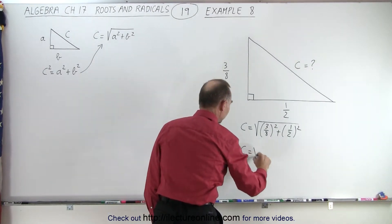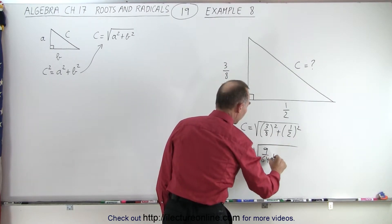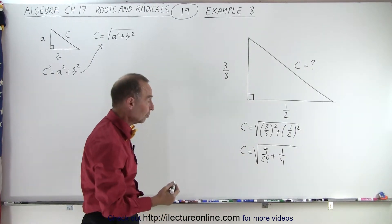So we say that c is equal to the square root of 9 over 64 plus 1 over 4. Of course, we need to add those two fractions together, which means we have to write them over a common denominator of 64.